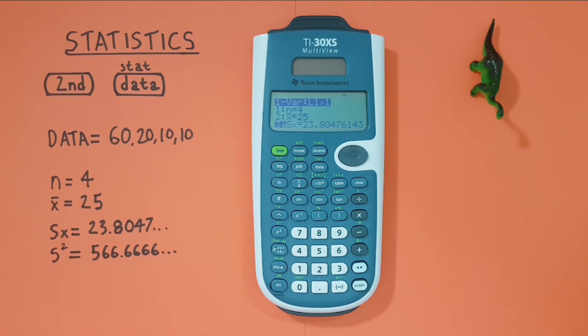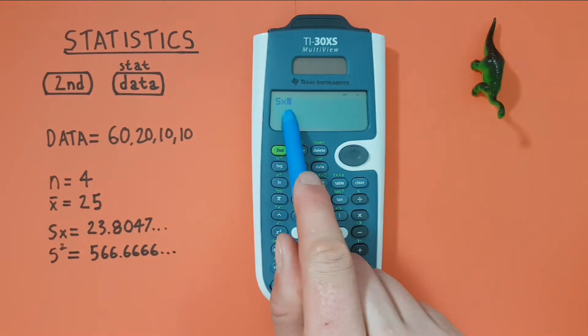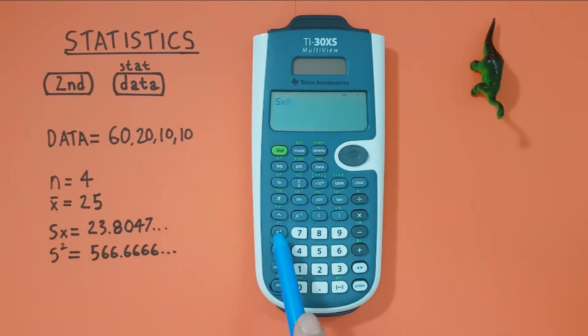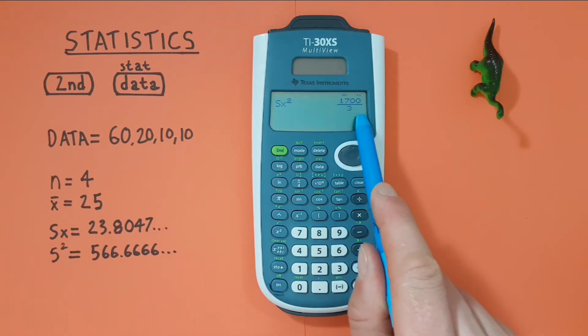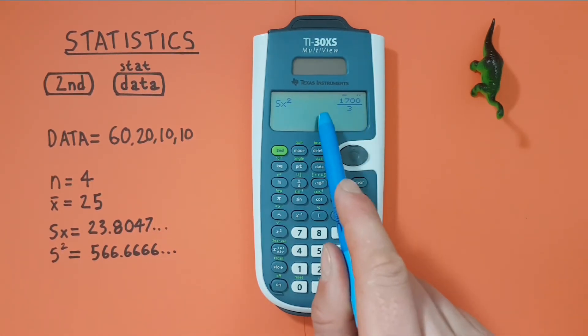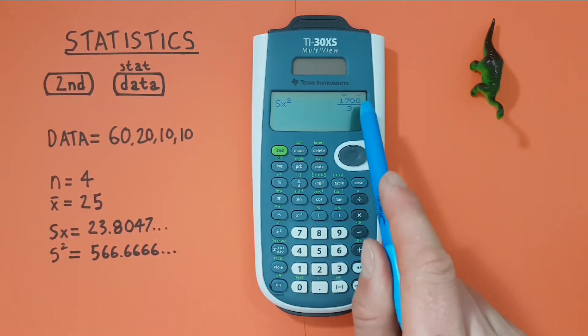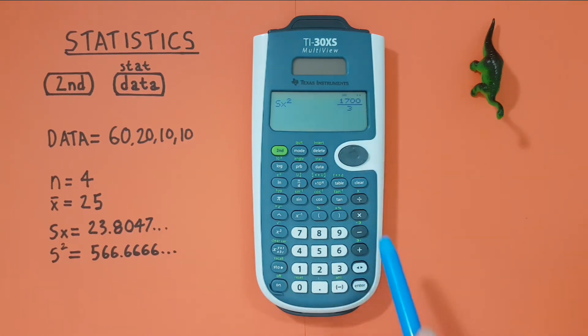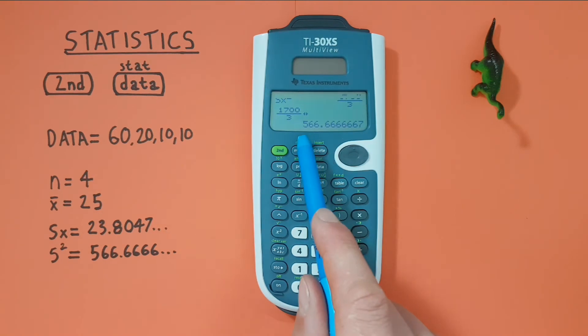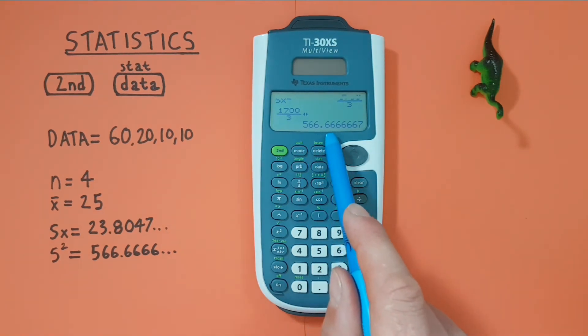If we want to find our sample variance you highlight number 3 and press enter. You'll now see the sample standard deviation on the screen. And then if we square that with this key here, the x squared, and press enter. We see we get our sample variance. This is giving it to us in a fraction. And if you want that in a decimal, we use the left and right key here to get our sample variance of 566.666 etc.